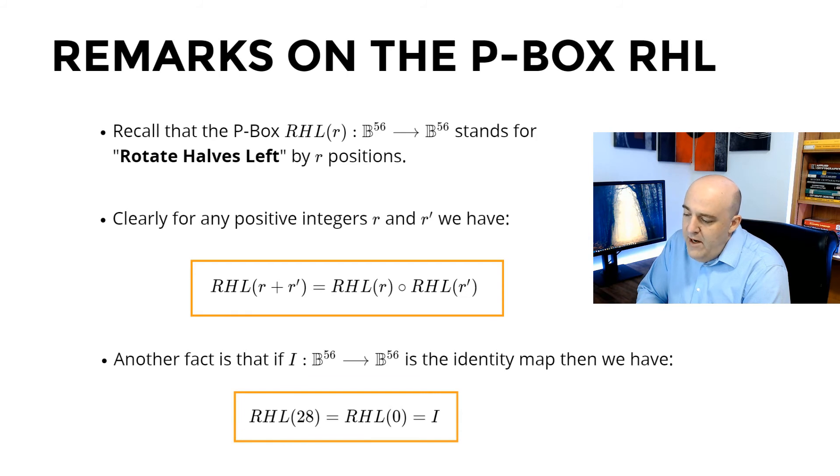And another little fact is that if we take the identity map, in other words, the map which maps the value X to X, it just doesn't change it at all. Then we have that RHL of 28 is the same as RHL of 0, which is the identity. If we take RHL of 0, that just means we're moving the halves left by 0, which means there is no changes at all. So it's obvious that RHL of 0 is the identity. And RHL of 28 is also the identity because we're moving each 28-bit half over 28 spots. So it just comes back to where it started.